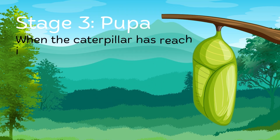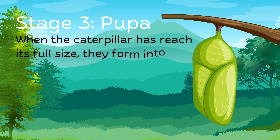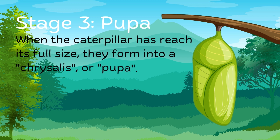Stage 3: The pupa. When the caterpillar has reached its full size, they form into a chrysalis or a pupa. The transformation over time looks like a change from a resting caterpillar to a shell-like covering.